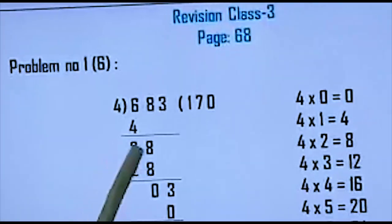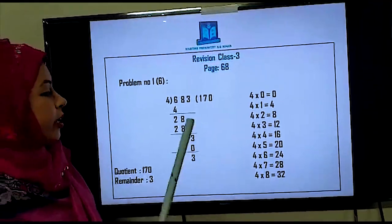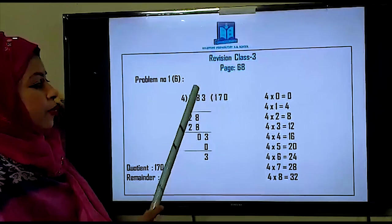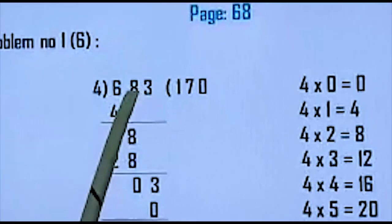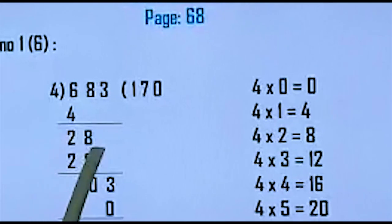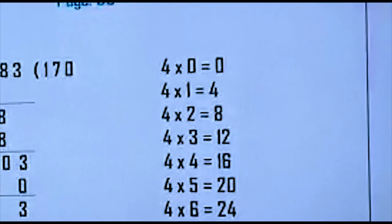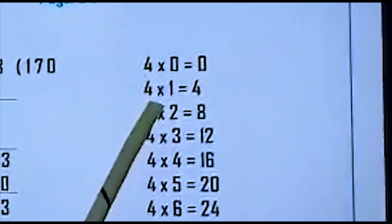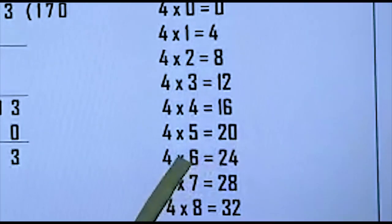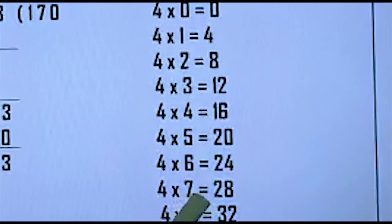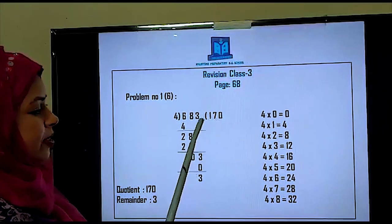The next step: we have to bring down the next number. We cannot bring down two numbers together — first we take the next number, which is 8. So we bring down 8, making it 28. Again we read out the 4 times table: 4 zeros are 0, 4 ones are 4, 4 twos are 8, 4 threes are 12, 4 fours are 16, 4 fives are 20, 4 sixes are 24, 4 sevens are 28. We got 28 in the 4 times table. So 4 sevens are 28.